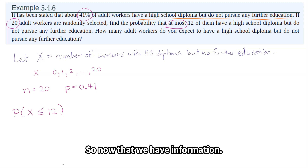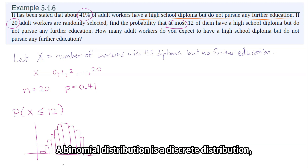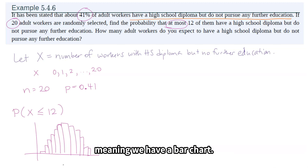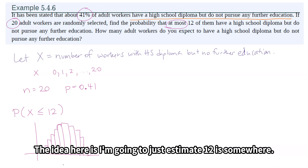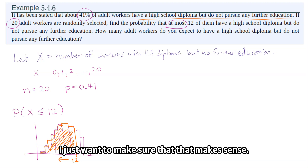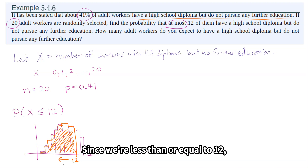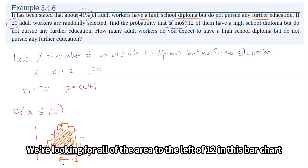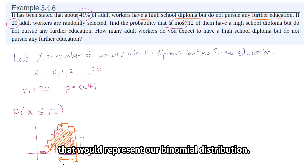Now that we have this information, I'm going to draw a graph to use for illustrative purposes. A binomial distribution is a discrete distribution, meaning we have a bar chart. The idea here is I'm going to estimate where 12 is, and we're looking for the total area at 12 and less. Since we're less than or equal to 12, we're looking for all of the area to the left of 12 in this bar chart that represents our binomial distribution.